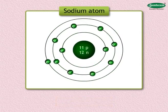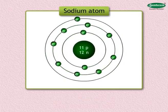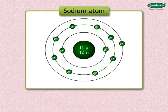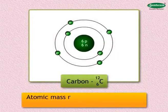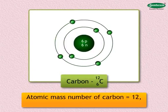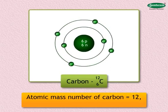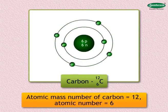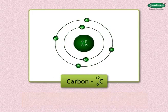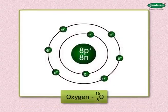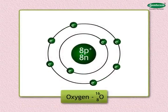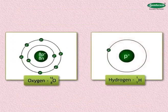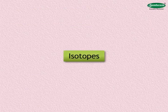When writing the symbol of an element, its atomic number and atomic mass number are also written. For example, carbon has an atomic mass number of 12, written as a superscript to the left of the symbol, and an atomic number of 6, written as a subscript to the left of the symbol. Similarly, the notation is applied for oxygen and hydrogen respectively.